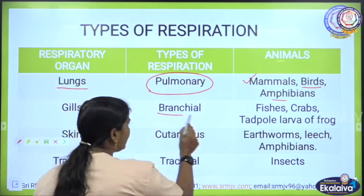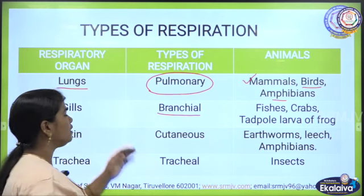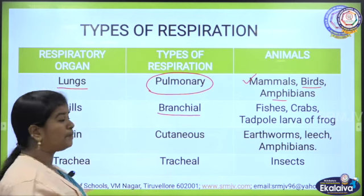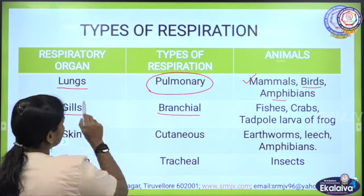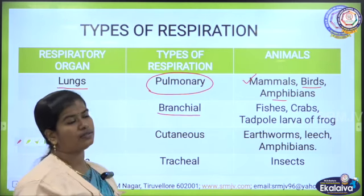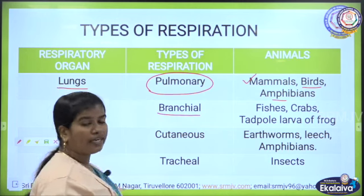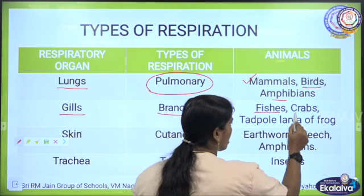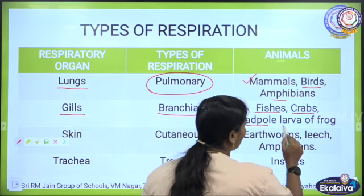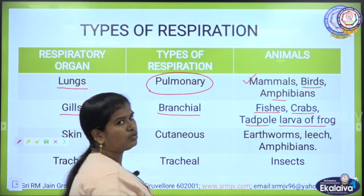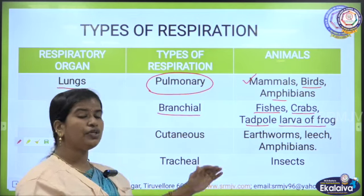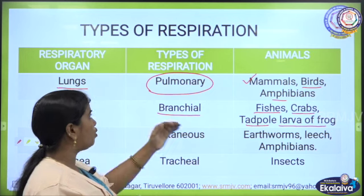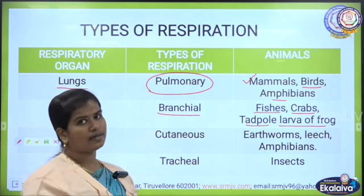The next type of respiration is bronchial respiration. In bronchial respiration, gills are the respiratory organ. Animals that use gills include fish, crabs, tadpoles, and the larva of the frog. These animals undergo bronchial respiration.